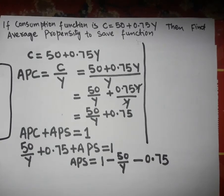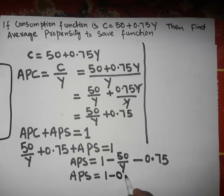Now, simplifying further, we rearrange the terms so this becomes APS equals 1 minus 0.75 minus 50 over Y.